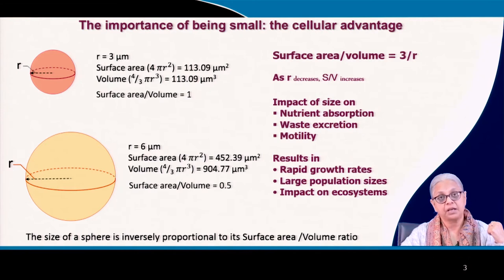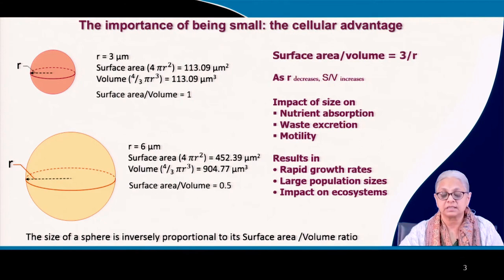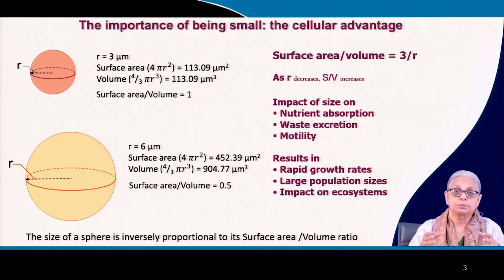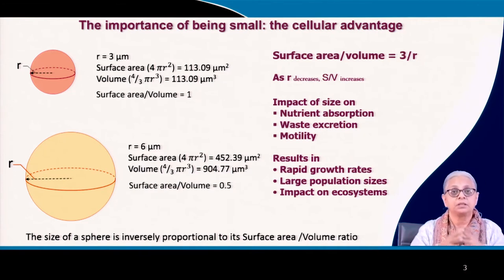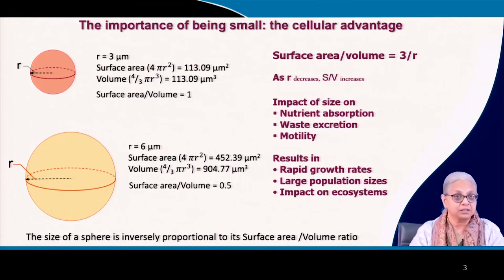This surface area to volume ratio — also called specific surface area in engineering — is crucial, determining the ability of bacteria to get what they need from the environment. As radius decreases, the specific surface area increases, giving smaller cells a greater advantage in absorbing nutrients. This is what the cellular advantage is all about. Small size also means less volume, and bacteria are able to move in their environment more conveniently — like driving a small car versus a big car in a congested city.